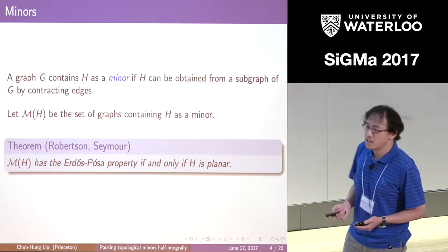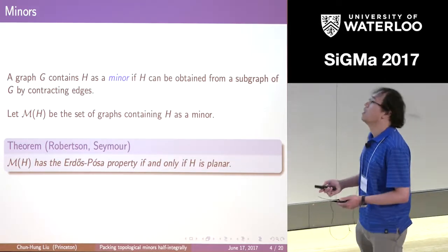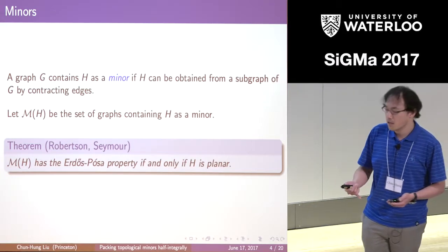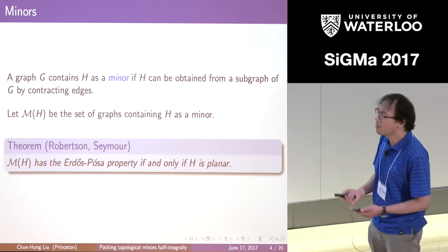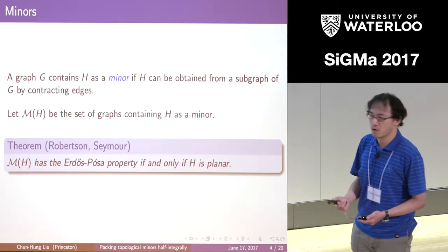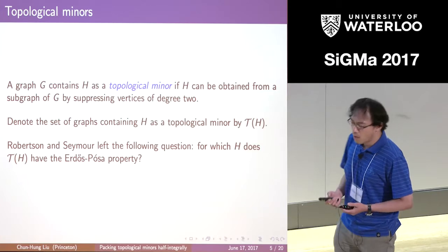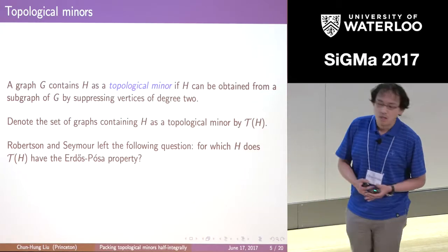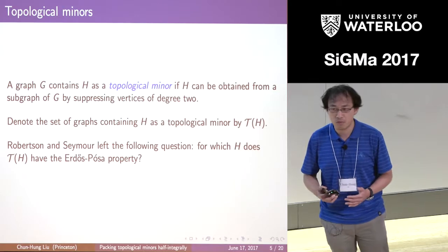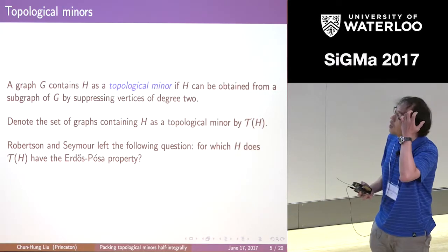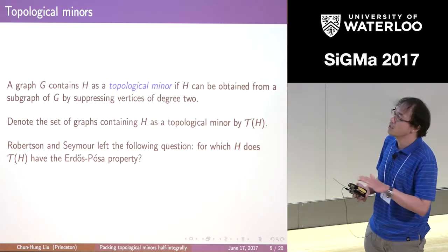This theorem also gives us a characterization of planar graphs besides Kuratowski's theorem. We know that planarity is equivalent to the lack of K5 or K3,3 as a minor, and also equivalent to the lack of K5 or K3,3 as a topological minor. So how about considering the Erdős-Pósa property with respect to topological minors? In particular, is it again equivalent to planarity? This was one of the problems asked by Robertson and Seymour: for what graphs H does the set of graphs containing H as a topological minor — let's call it T(H) — have the Erdős-Pósa property?